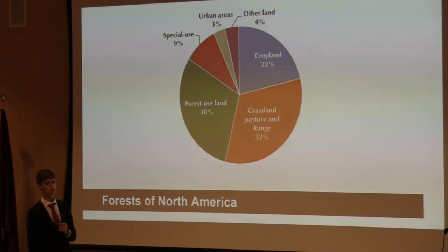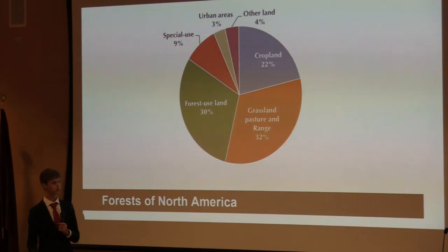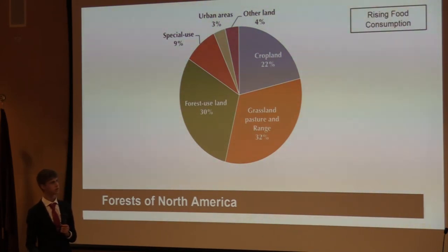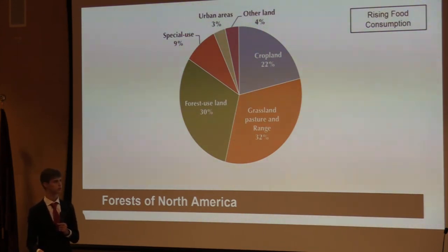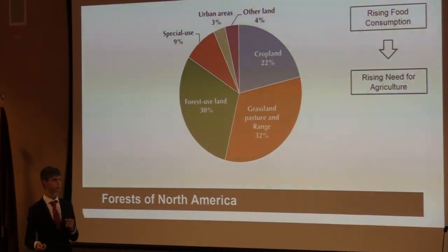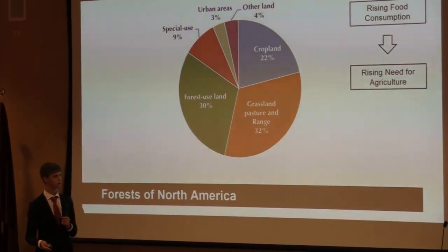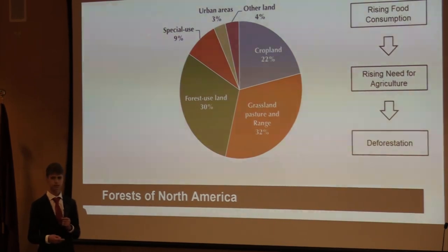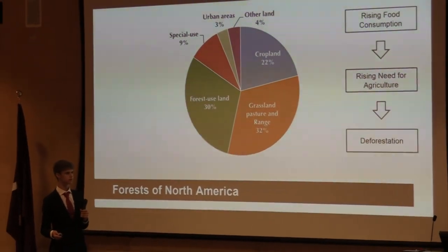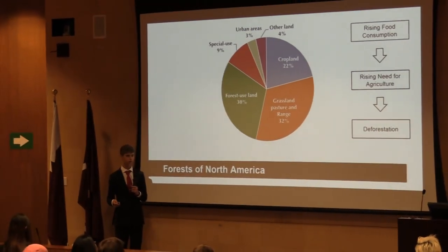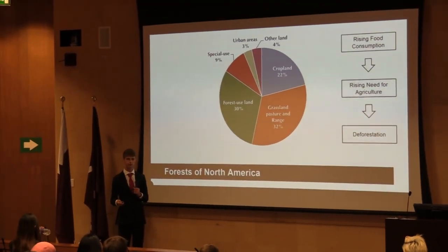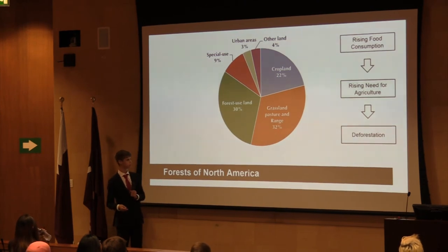So what is driving this deforestation that is so detrimental to our earth? As you can see here, more than half of the land in the United States is being converted into agricultural or grazing land — essentially food production. As the population of the earth grows ever larger, we'll need more and more food to provide for them, and so we'll need more and more land. But this leads to deforestation, and so it's not something we should be encouraging. Instead, we should find a way to make agriculture more efficient, instead of taking up more land.